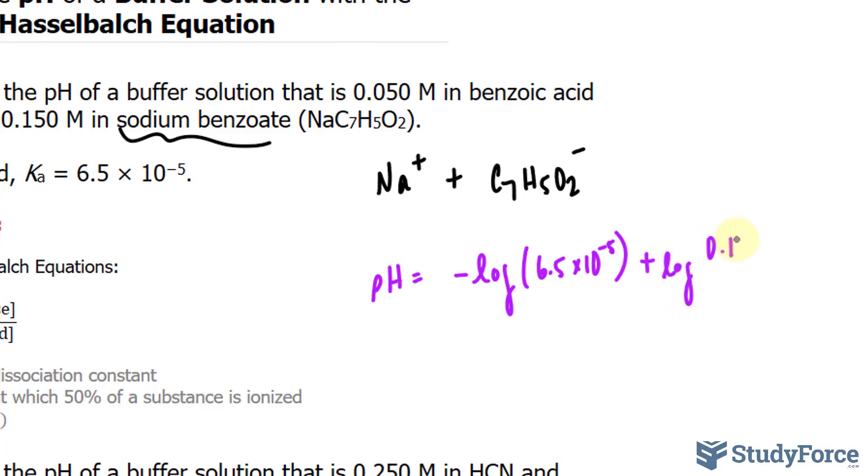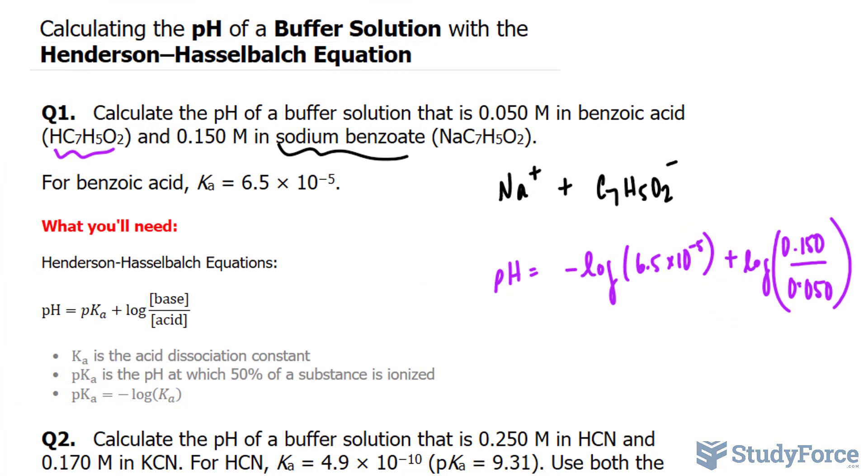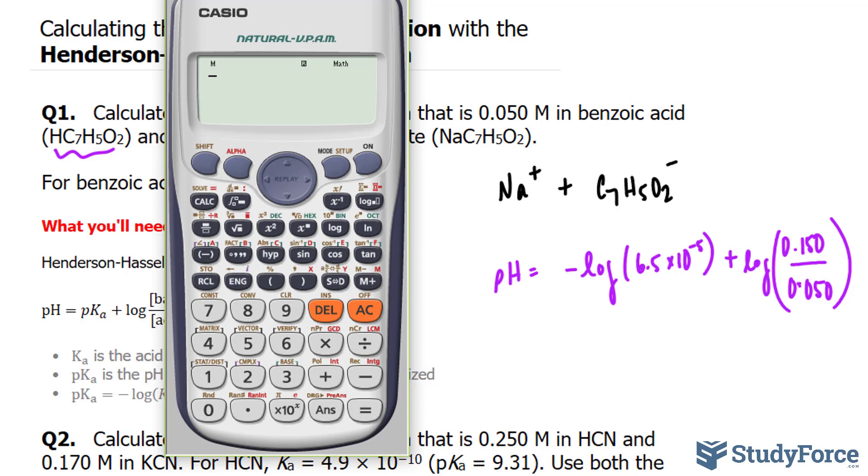Over the concentration of our acid, 0.050. We'll now substitute all of this into our calculator, negative log of 6.5 times 10 raised to the power of negative 5.